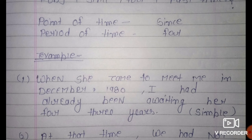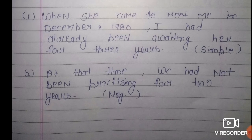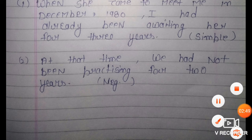For example: 'When she came to meet me in December 1980, I had already been awaiting her for 3 years.' Yeh simple sentence hai — 'when she came to meet me' — aur 'for' ka use ho raha hai kyunki '3 years' period of time hai. Second example: 'At that time we had not been practicing for 2 years.' Yahan negative sentence hai aur 'not' ka use kiya gaya hai.